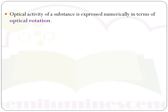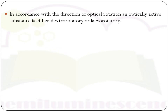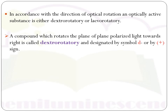The optical activity of a substance is expressed numerically in terms of optical rotation. The angle through which a substance rotates the plane of plane polarized light is called optical rotation. According to the direction of optical rotation, optically active substances are divided into two types: dextrorotatory and levorotatory. Dextro means right and levo means left. Dextrorotatory compounds rotate plane polarized light to the right and are represented by the symbol d or plus sign.